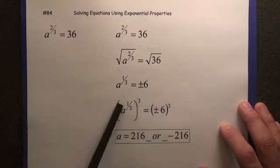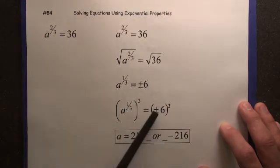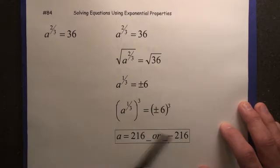So that's why we have to put plus or minus. Then, 3rd power on both sides gives us, well, 6 cubed is 216. Negative 6 cubed is negative 216. That's why there's two answers.